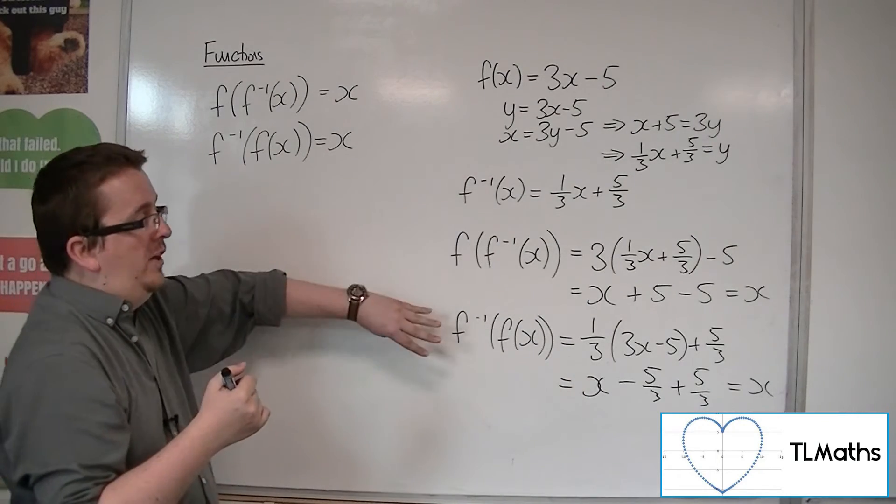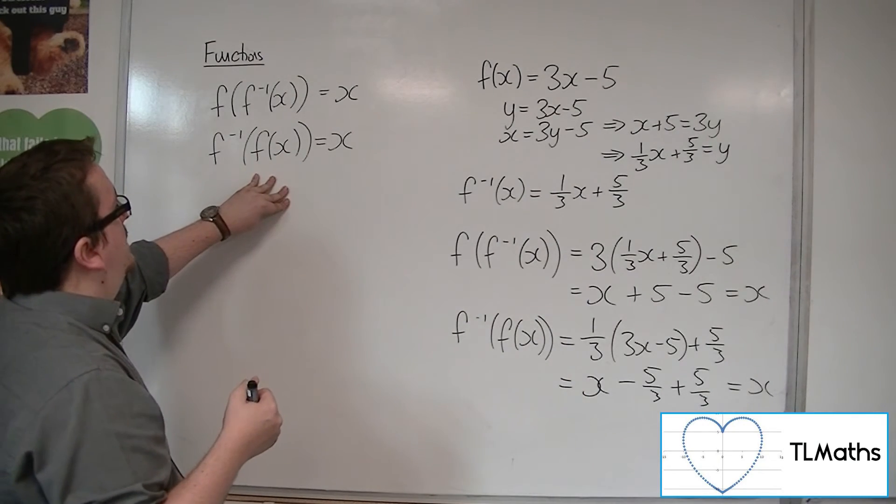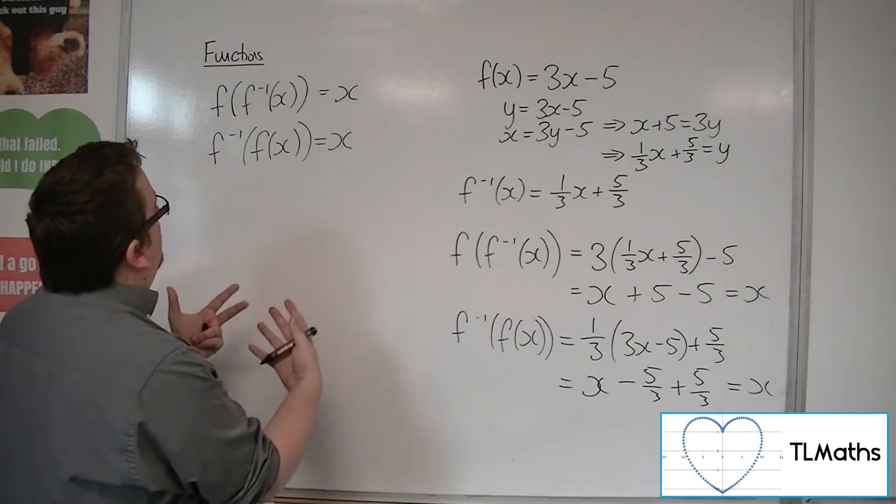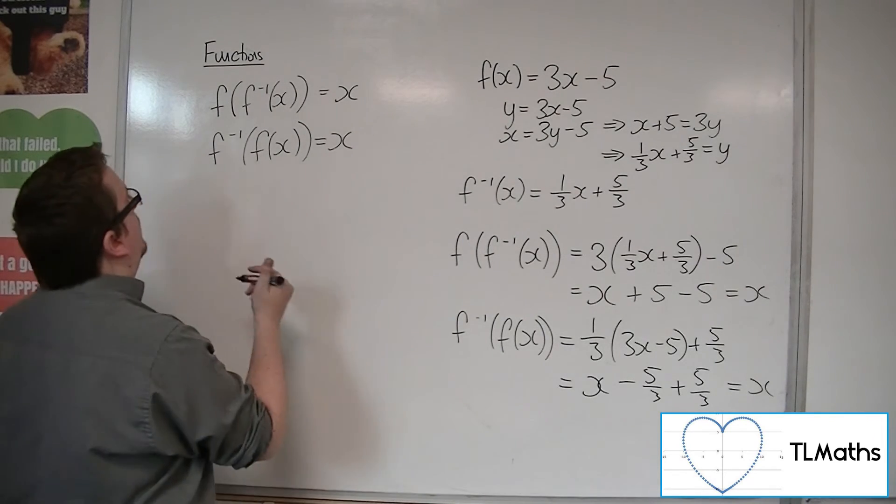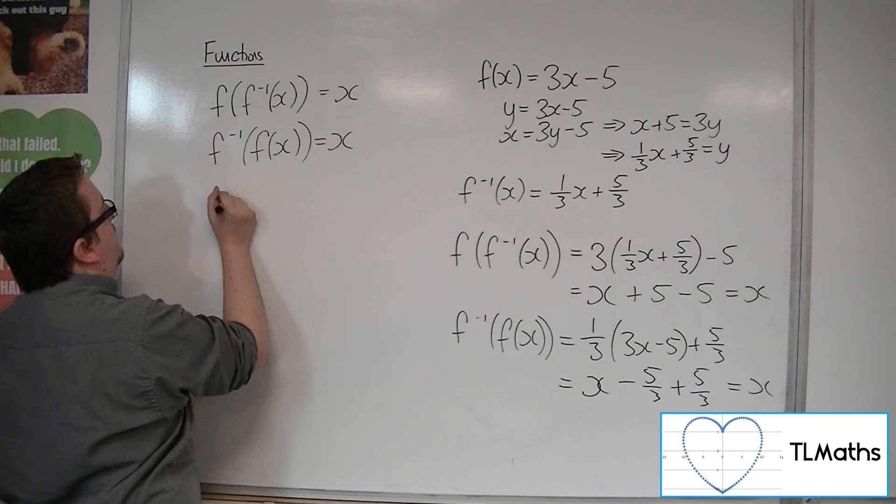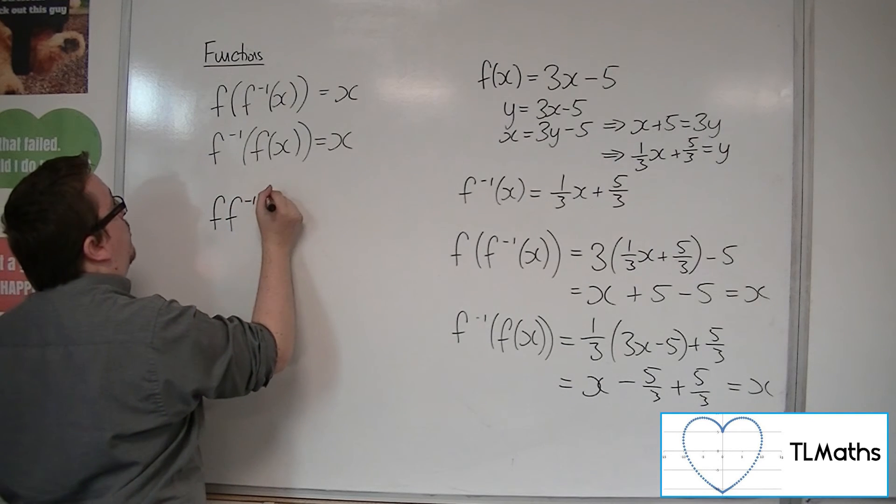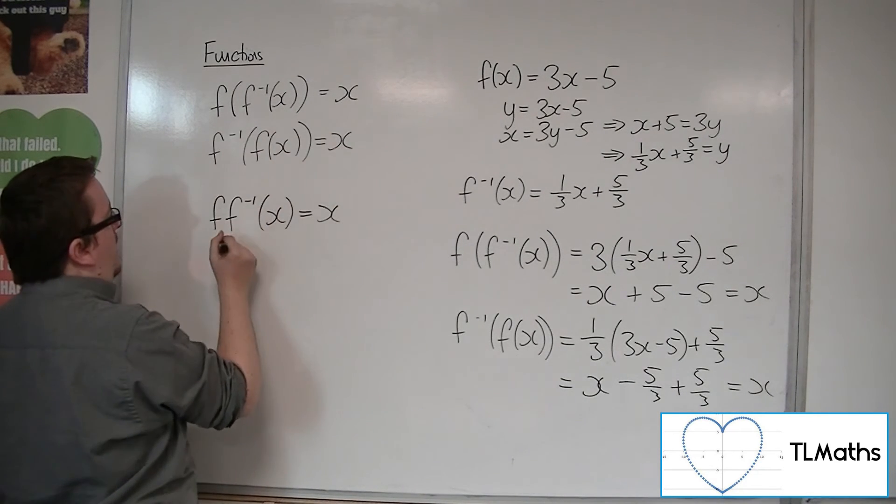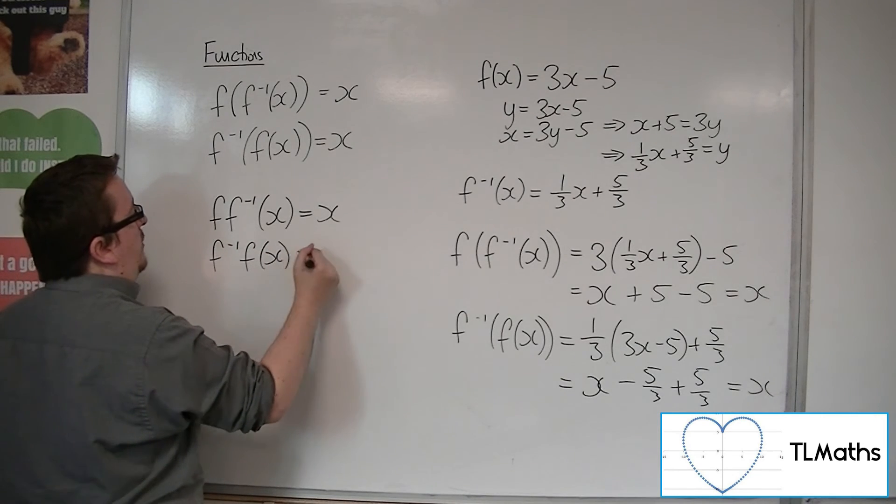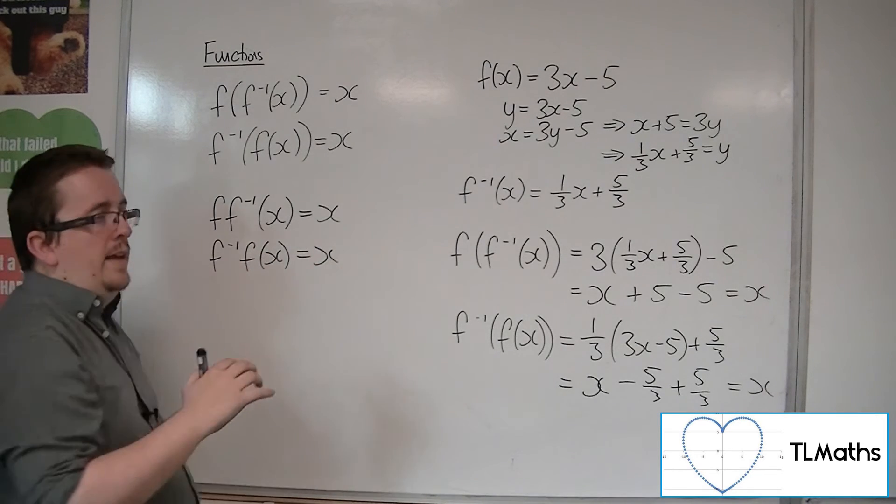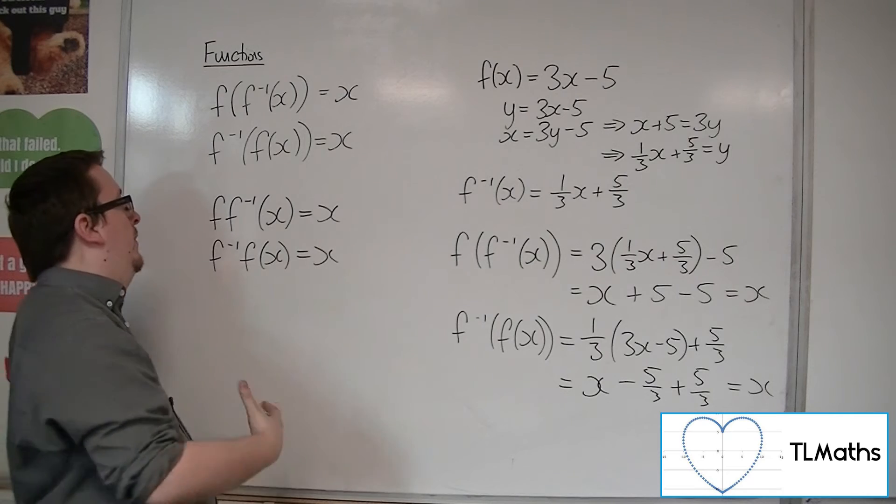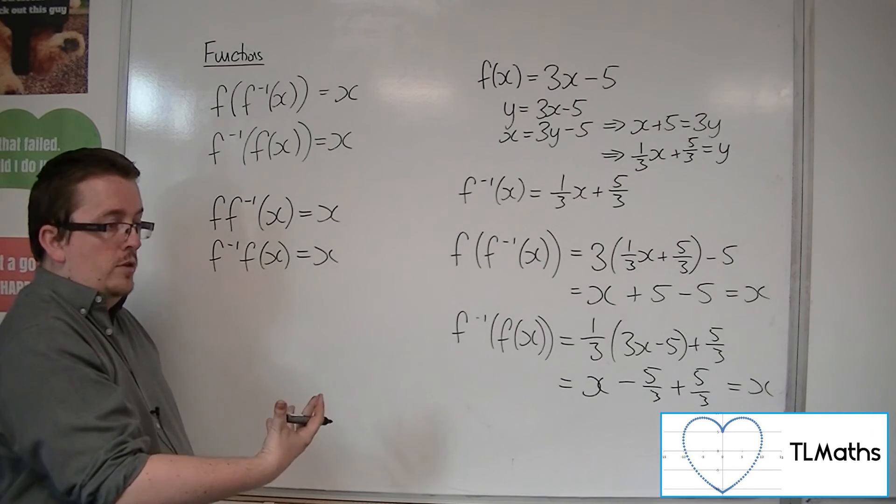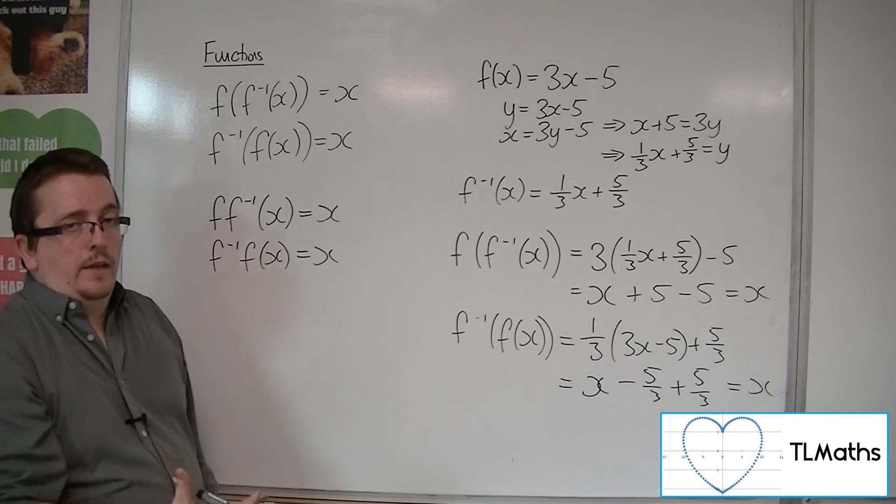This is just one example of this working. You can abbreviate this, because you don't need to have those brackets in it from what we know from composite functions. You can write that as f, f minus 1 of x is x, and this one as f minus 1, f of x. Either way round, when you put a function's own inverse function into the function, then you should get x.